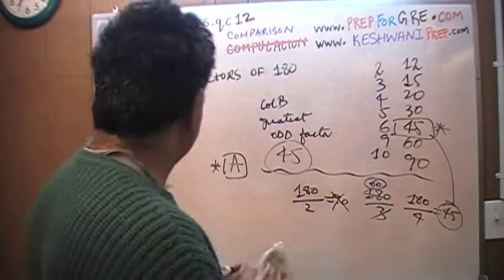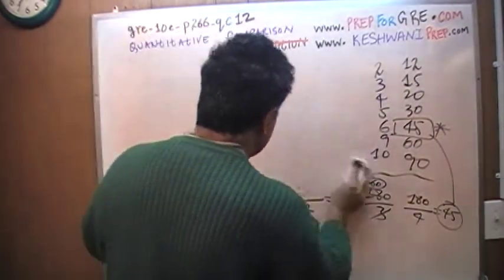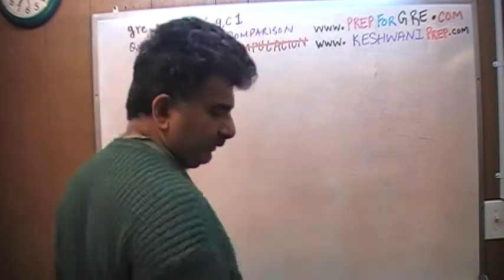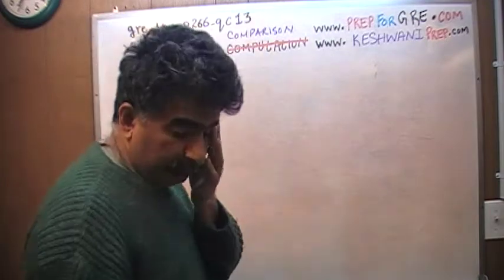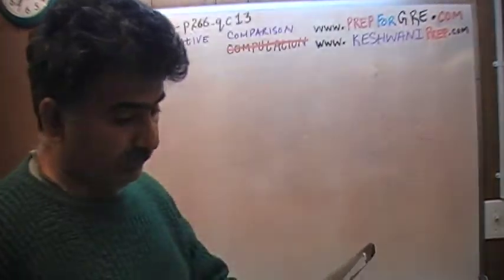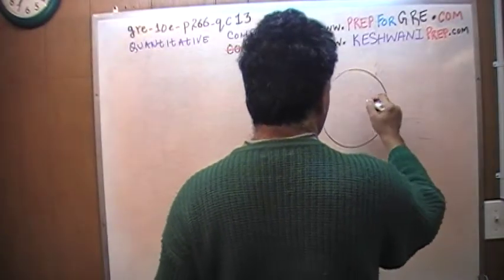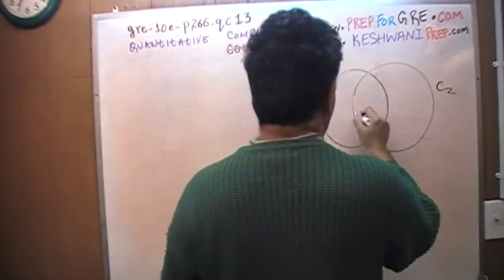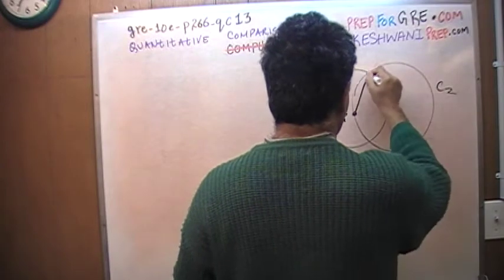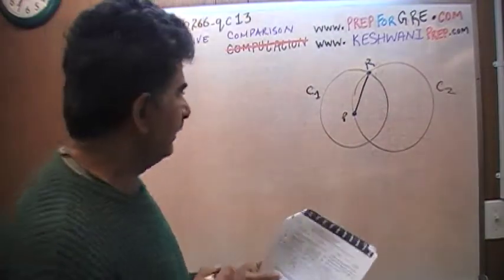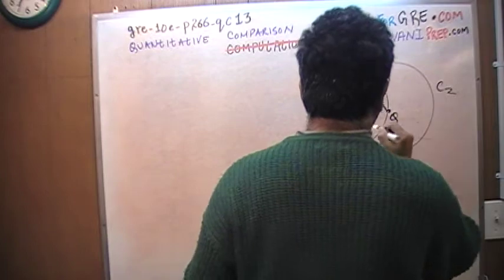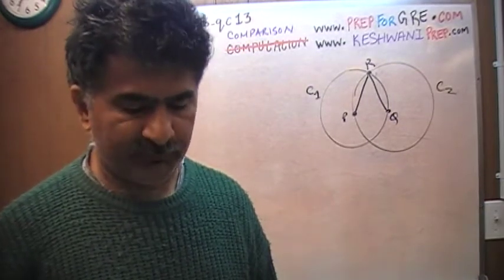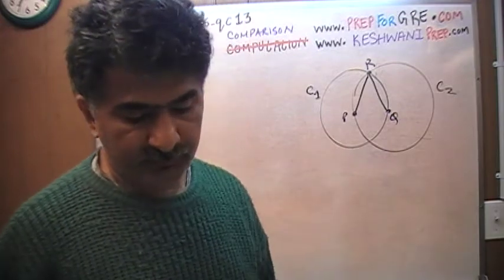Let's move on to number 13 on the same page. Number 13 says, in circle C1 and C2, they give you two circles. This distance P to R is same as this distance Q to R. The question simply is, how do the circumferences of these two circles compare? In the first column, they give you the circumference of C1. In the second column, they give you circumference of C2.